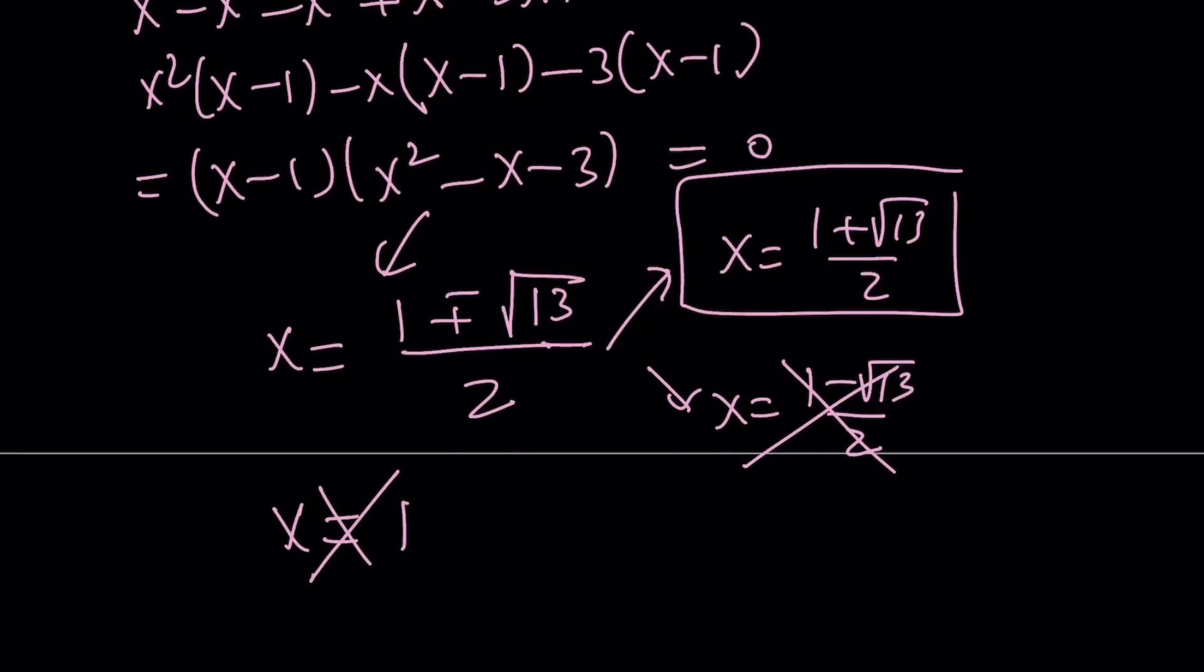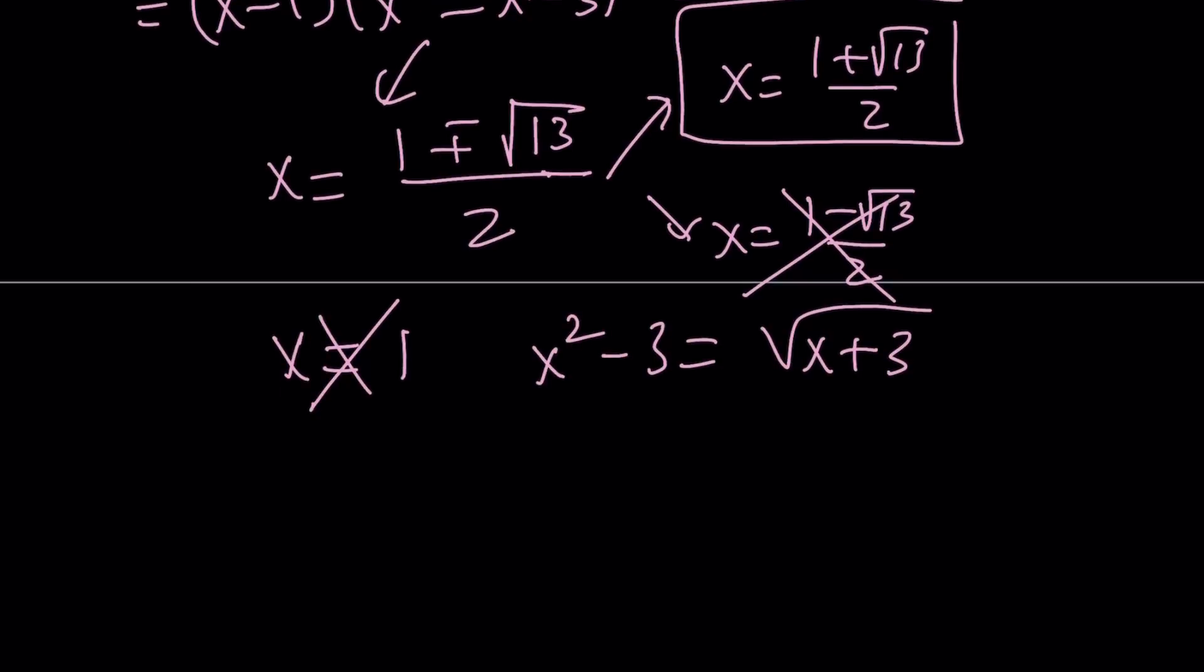And the reason why we get extraneous solutions is because we squared both sides. And let me give you the original equation. So you can kind of check. If you substitute 1 on both sides, you get 1 minus 3 and the square root of 1 plus 3. This is 2. This is negative 2. So that problem is eliminated. Well, I shouldn't say eliminated, but it just causes another problem. So that issue is eliminated when we square both sides. Because negative 2 squared and 2 squared are equal, but negative 2 and 2 are not equal.